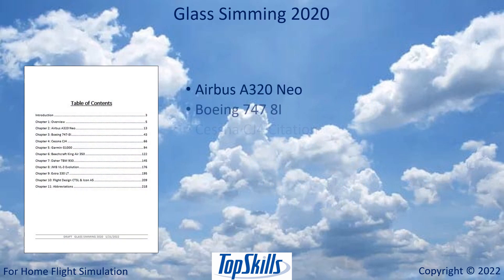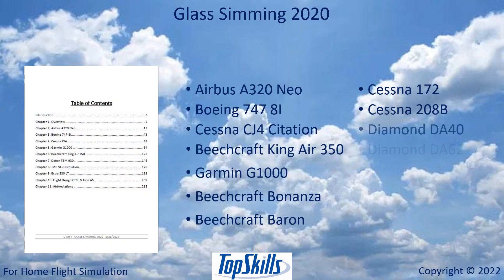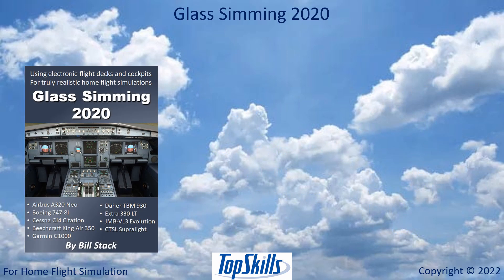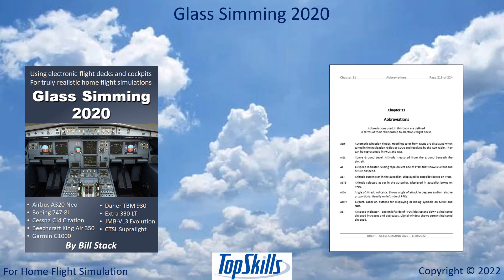Ten dedicated chapters explain jets, turboprops, singles, twins, heavy, and light aircraft. An appendix defines glass simming abbreviations and acronyms used in the book.